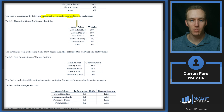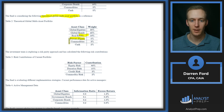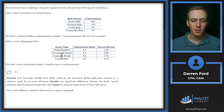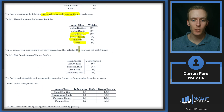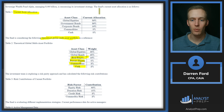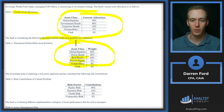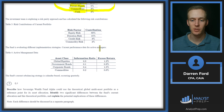Table two shows the theoretical portfolio. We've got global equities at 35%, global bonds at 45%. Main differences include some real estate, private equity, and also some commodities and cash. So we're going to talk about how we could use this theoretical portfolio as a reference point for the current asset allocation and then discuss two big differences between these two allocations.